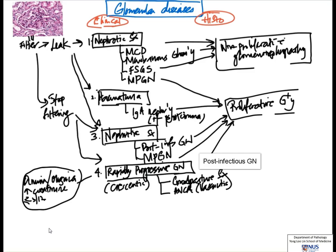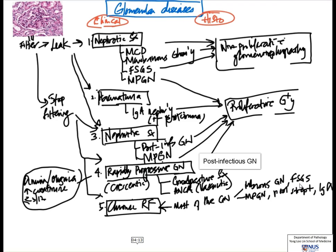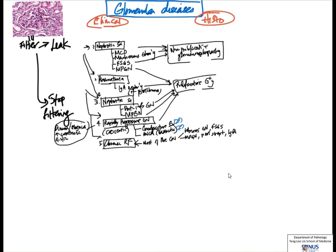The last clinical syndrome is chronic renal failure — as opposed to acute renal failure — and this is again due to poor function of the filter. Chronic renal failure can be caused by any of the glomerulonephritides mentioned, including membranous glomerulonephropathy, focal segmental glomerulosclerosis, membranoproliferative glomerulonephritis, post-infectious or post-streptococcal glomerulonephritis, and IgA nephropathy. Note that Goodpasture syndrome and ANCA-related vasculitis are considered secondary glomerular diseases, not primary.